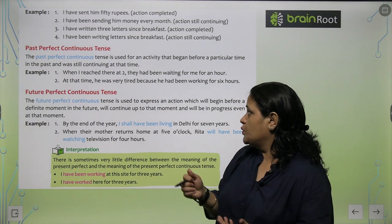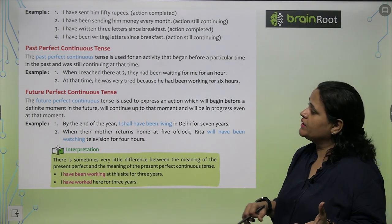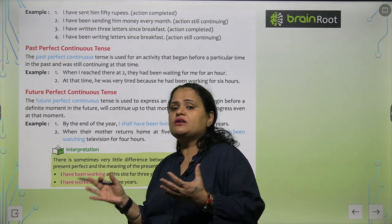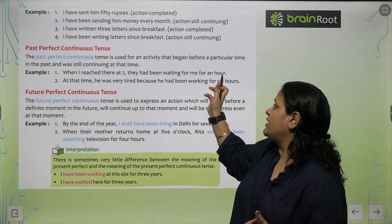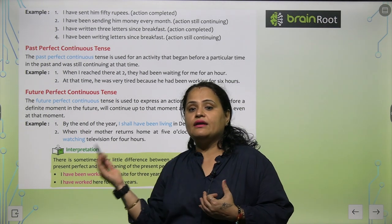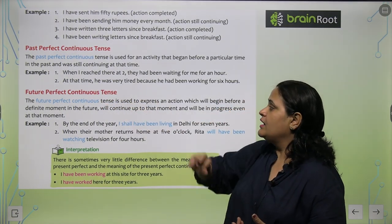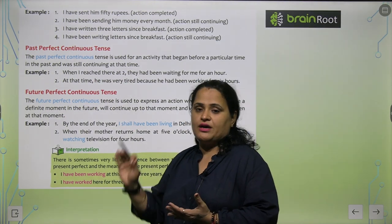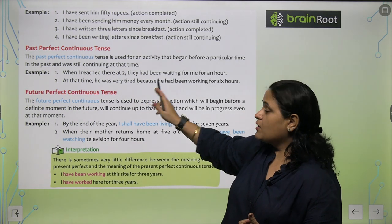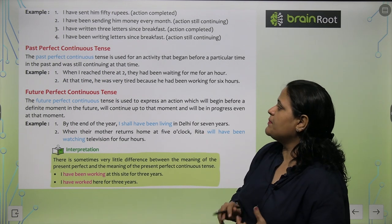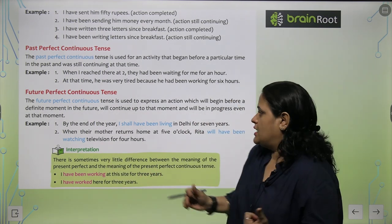The past perfect continuous tense is used for an activity that began before a particular time in the past and was still continuing at that time — ek particular time se pehle hi wo activity start ho gai thi aur us time tak chal rahi thi. For example: When I reached there at 2, they had been waiting for me for an hour. At that time he was very tired because he had been working for 6 hours. The first part of the sentence is in simple past, and the other in past perfect continuous tense.